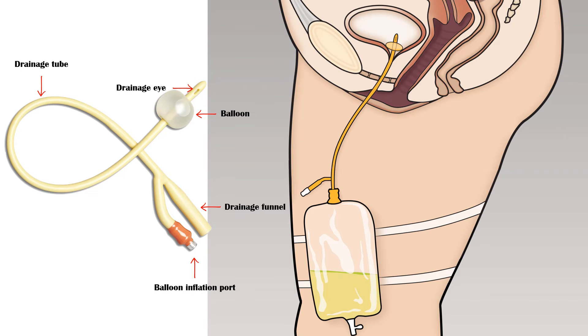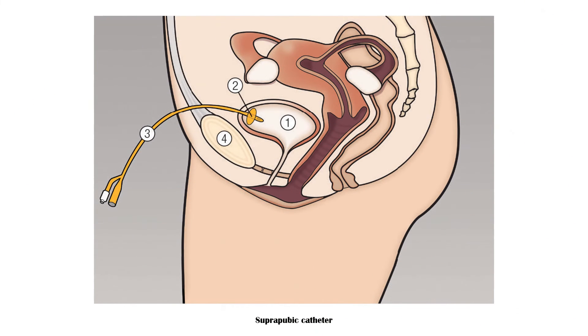In situations where urinary catheterization is difficult to perform, a suprapubic catheter may be inserted to drain urine, as you can see in this picture.